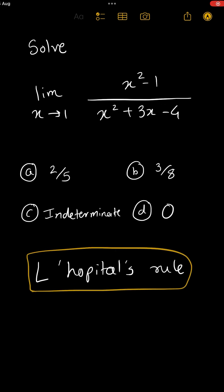So the rule says that if in the question it is given as limit x tends to 1, first try to put 1 in the question. One square minus one will be zero upon one square plus three into one minus four, that will also be zero.